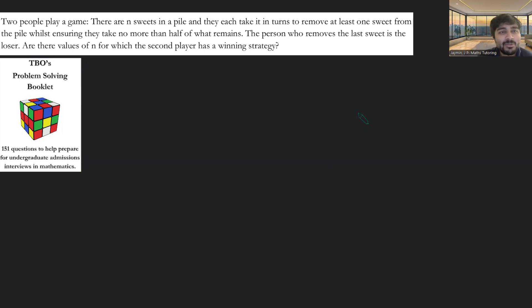We have this here. Two people play a game. There are N sweets in a pile, and they each take turns to remove at least one sweet from the pile, whilst ensuring they take no more than half of what remains. The person who removes the last sweet is the loser. Are there any values of N for which the second player has a winning strategy?